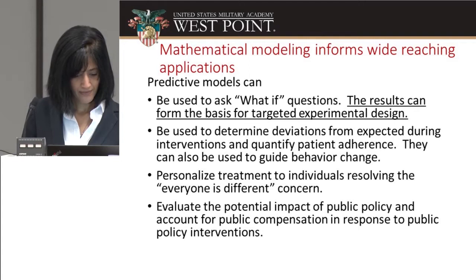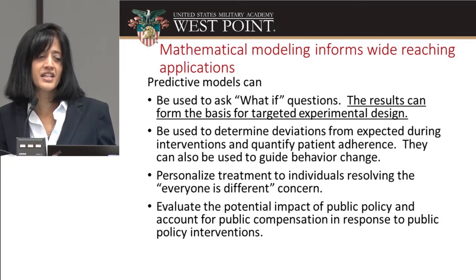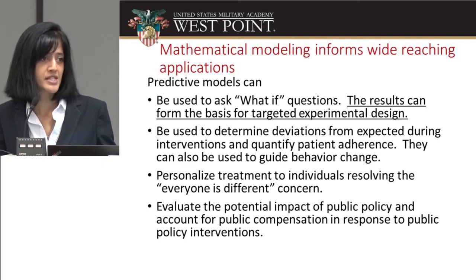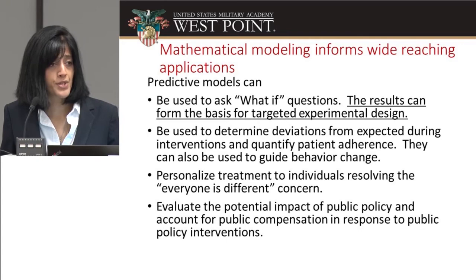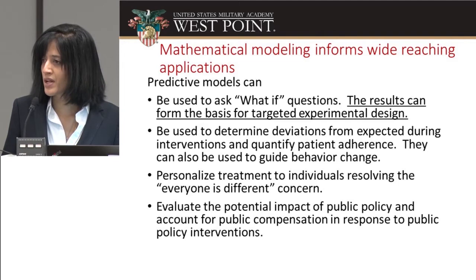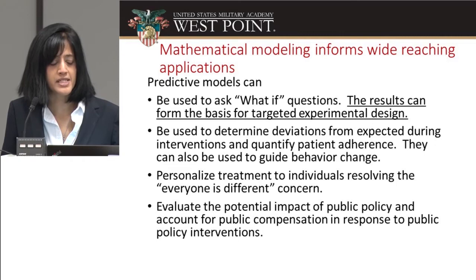Emily's talk really talked about the potential impact of public policy and the public's response to that public policy intervention. In addition to that, at times there are unintended consequences of a public policy. For example, if you tax sugar-sweetened beverages, maybe someone's going to buy their own iced tea and put more sugar into it. So mathematical models can explore this beforehand, before implementation of a public policy, to reveal some of those unintended consequences.